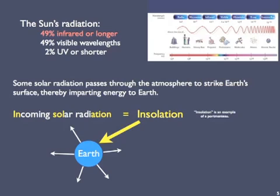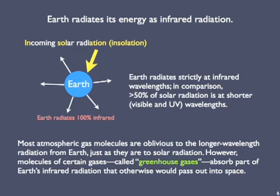As we've seen, some of the insolation doesn't make it through the atmosphere. Most of the insolation does make it through, though, and the Earth absorbs much of it, thereby increasing its own energy level. Earth then radiates its sun-delivered energy strictly at infrared wavelengths. In comparison, remember that over 50% of solar radiation is at shorter wavelengths, visible and UV.